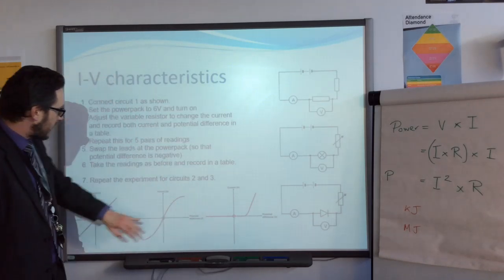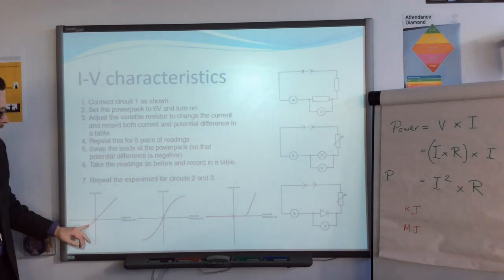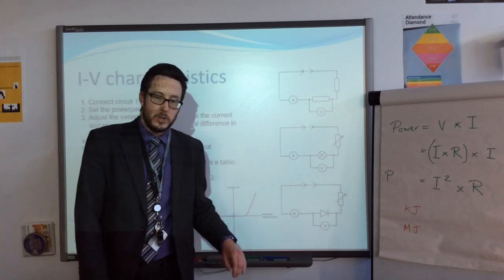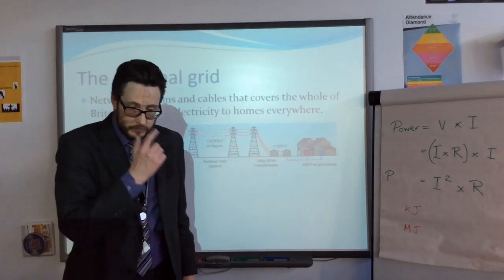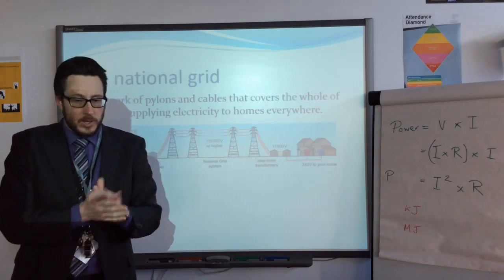These are the three graphs, the VI or IV graphs, for an ohmic resistor, a filament light bulb, and a diode. Just going to blast through a few little bits as we come close to the end.